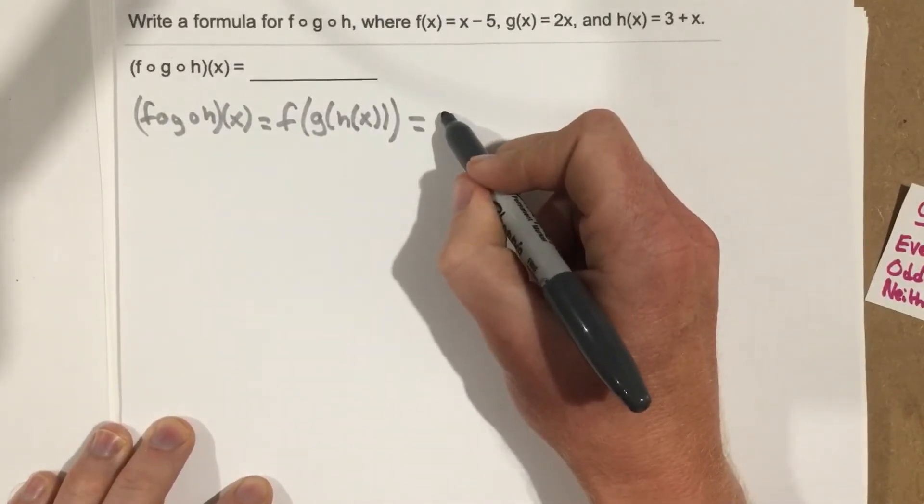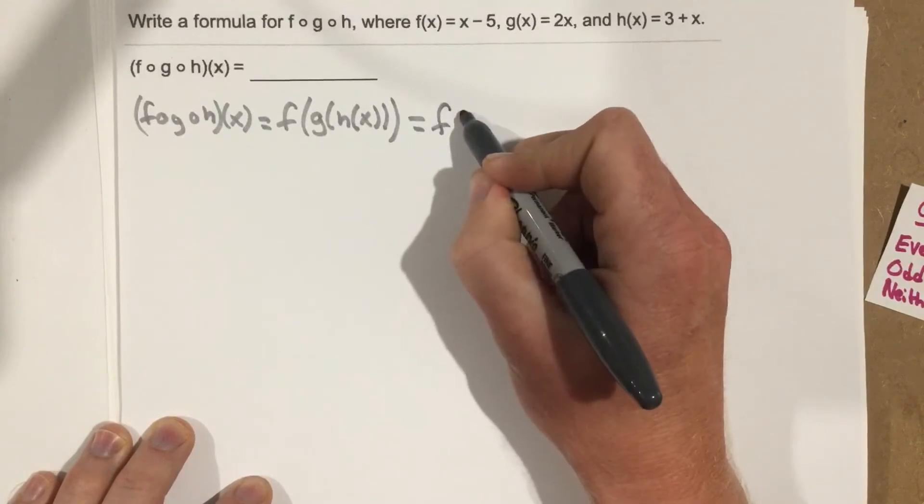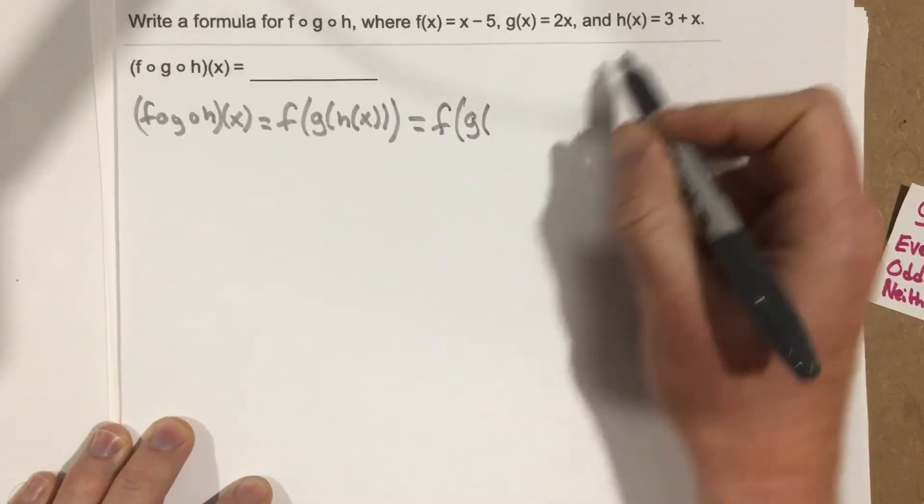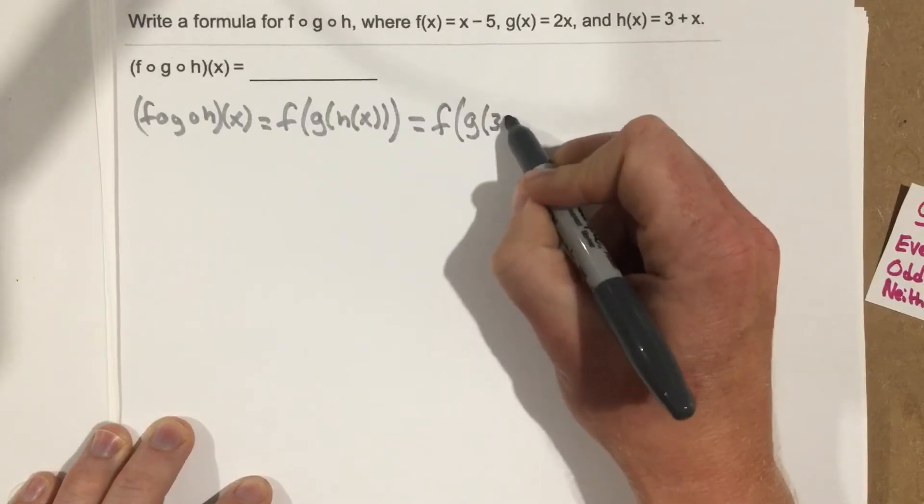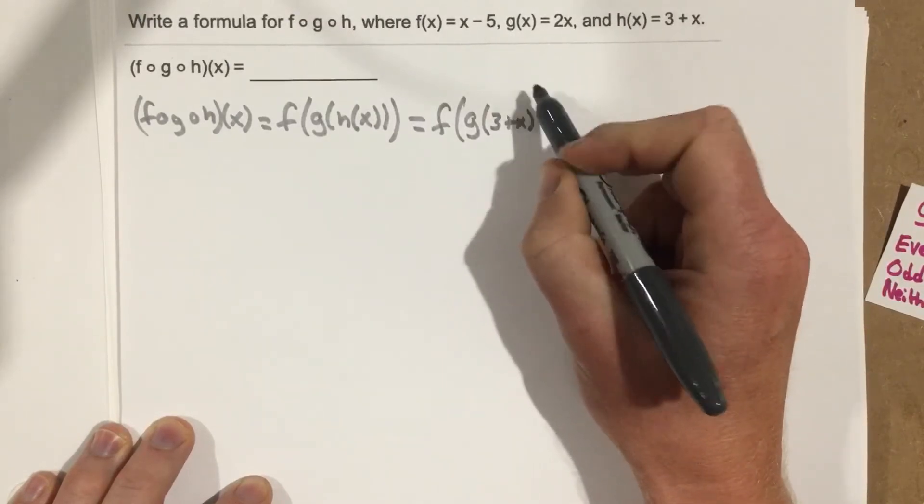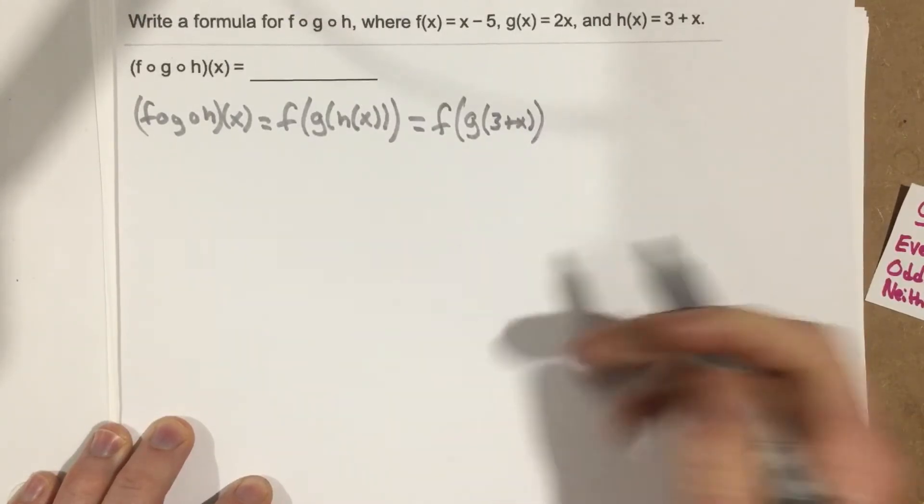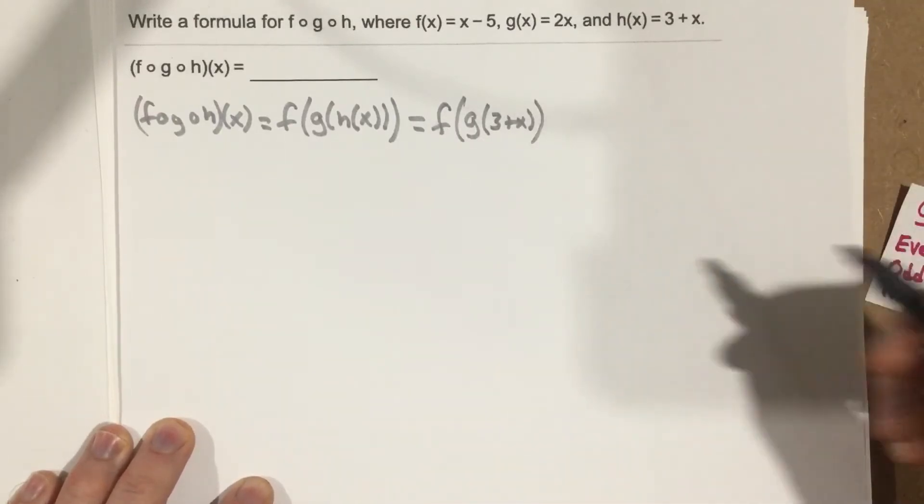So I'm going to say that that's equal to f of g of, and I just plug in 3 plus x, because that's what h of x is. And you can see it starts to look good right away, look a lot better at least.